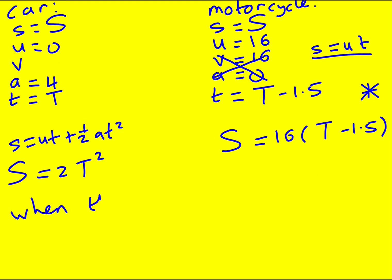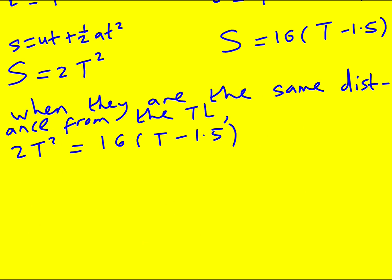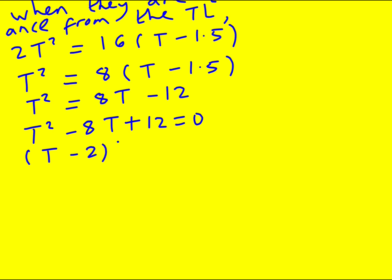So when they are the same distance from the traffic lights, it must be that 2t squared equals 16 times t minus 1.5. We've got an equation that we can solve to find t. And it's a quadratic. We're going to get two solutions. I'm going to divide through by 2 before I expand the bracket. So that's going to give 8t minus 12. And therefore, t squared minus 8t plus 12 equals 0.